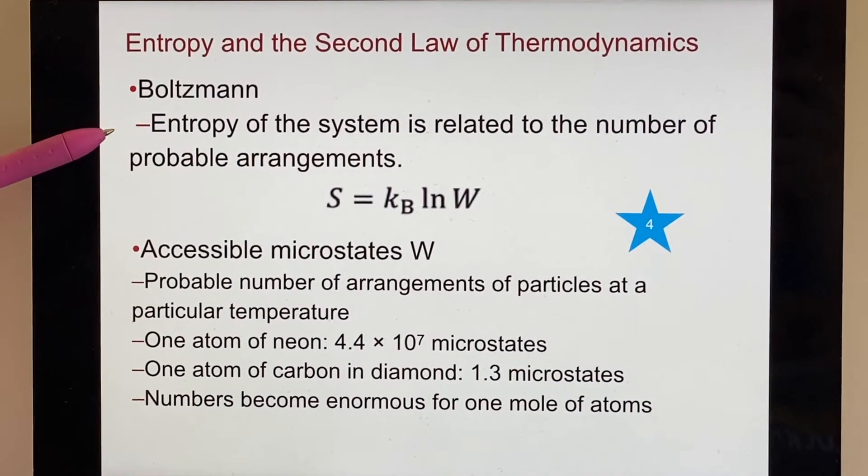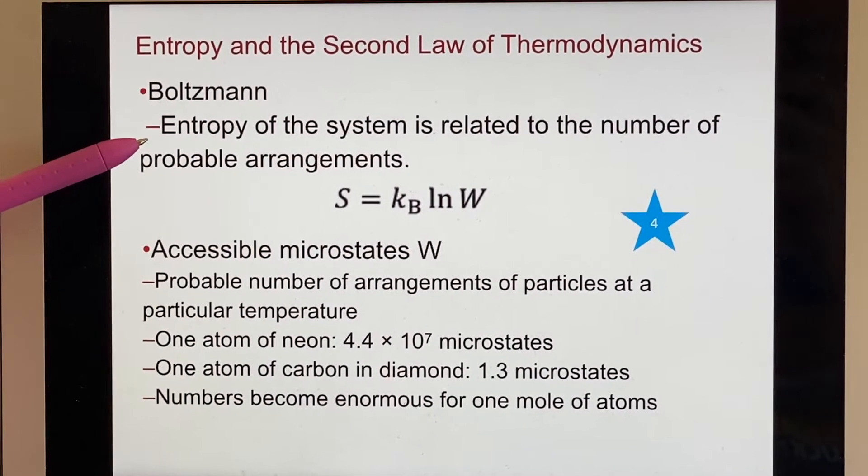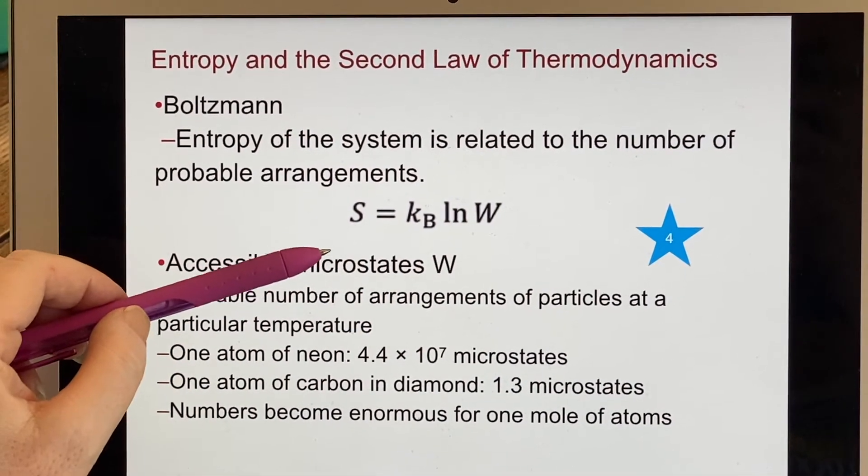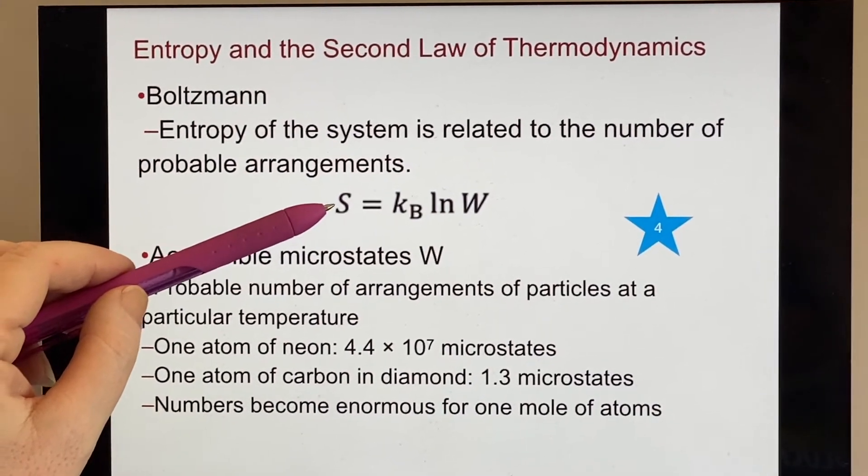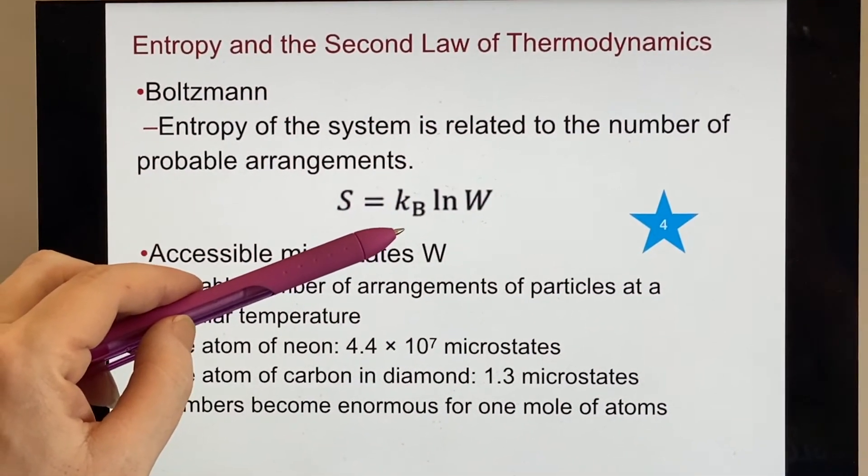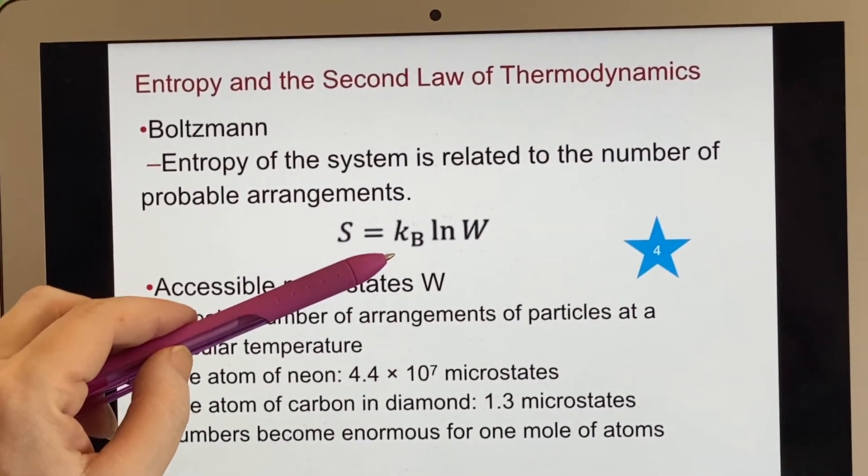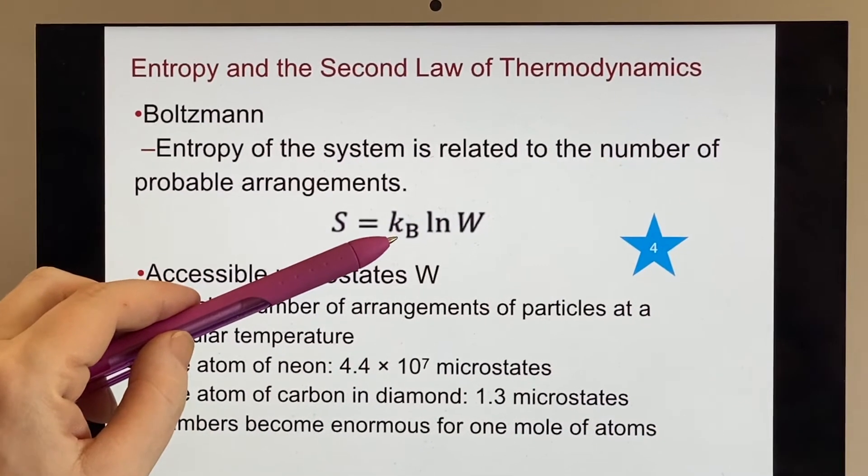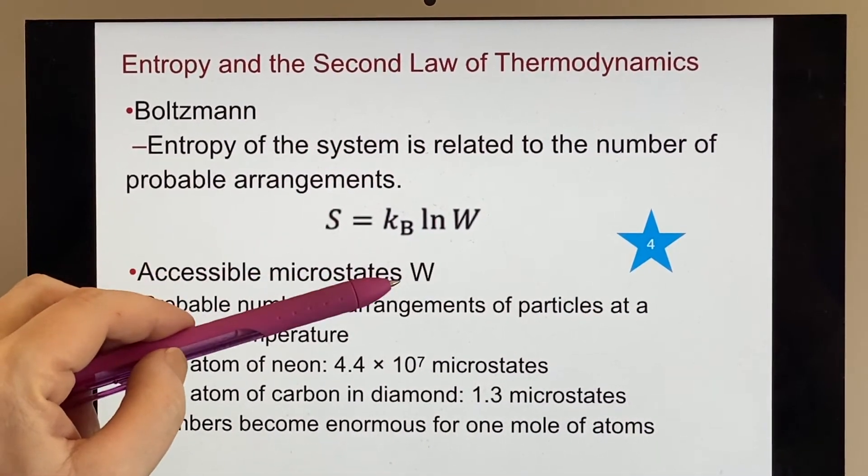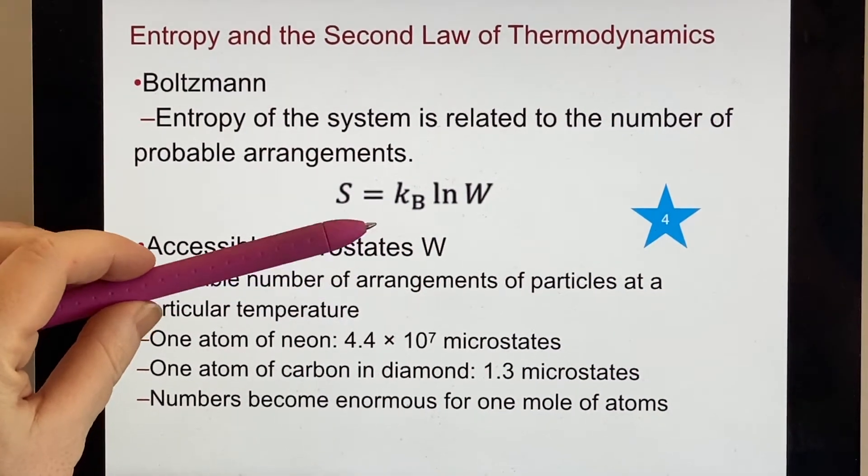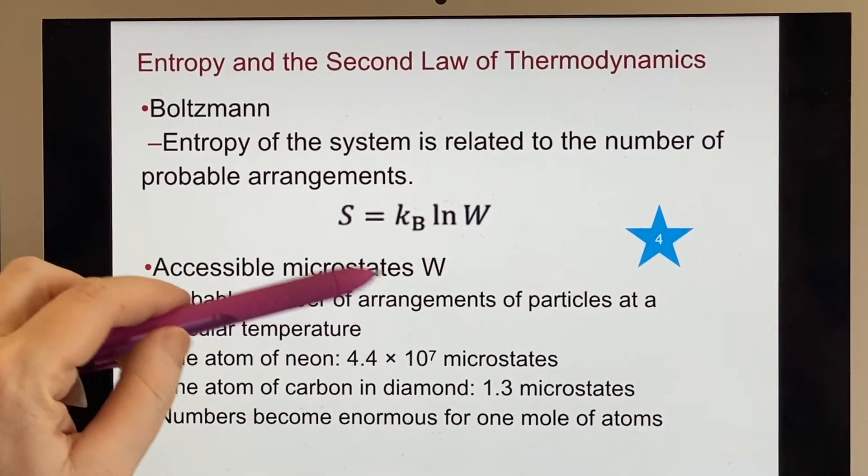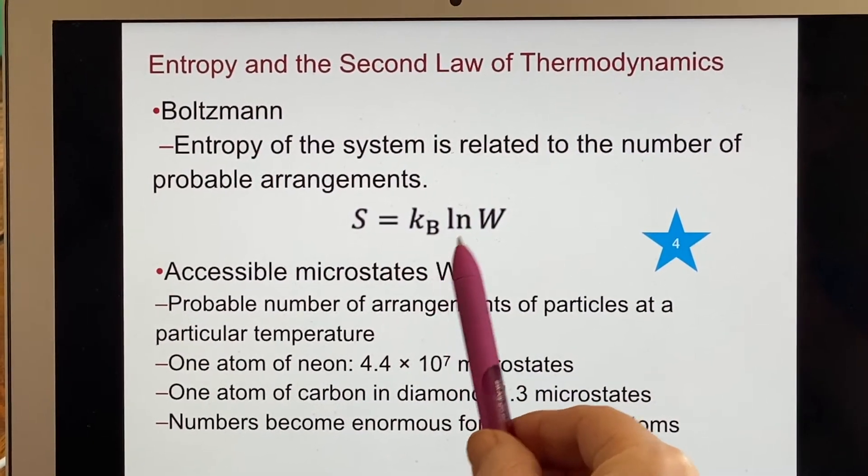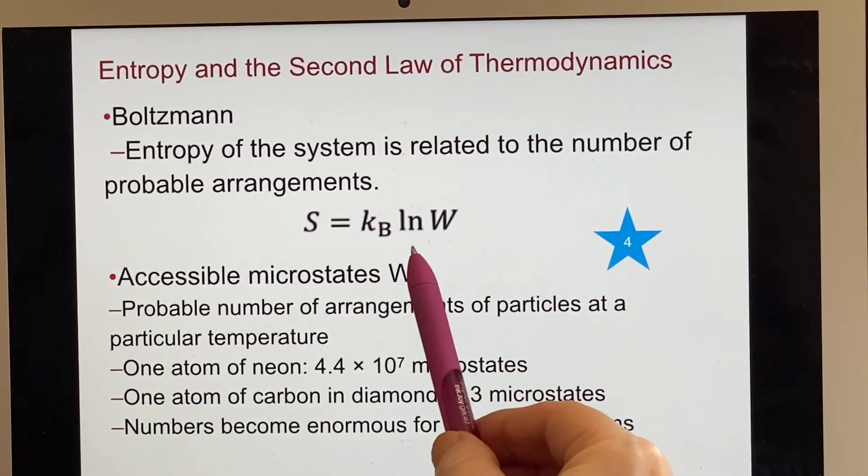He had said that the entropy of the system could be related to the number of probable arrangements. And it turns out that the entropy was equal to k sub b, which in this case is Boltzmann's constant. You'll notice this is a small k and a capital B. That's different than what we were talking about in the previous chapter where we had a capital K and a small b. We have no end of constants in this course and k is everywhere. So you have to be very careful to make sure you understand which one we're talking about at any given time. And then it would be multiplied by the logarithm, the natural log of W.